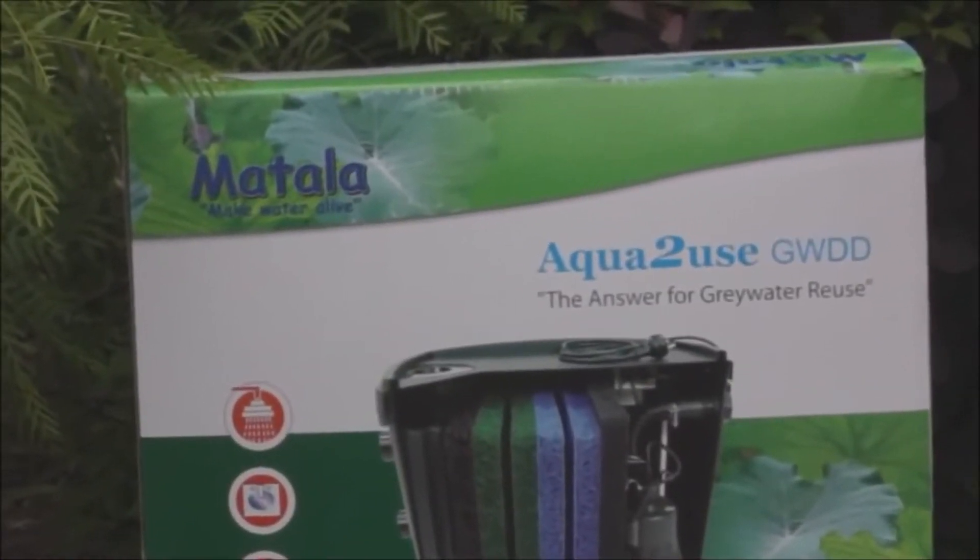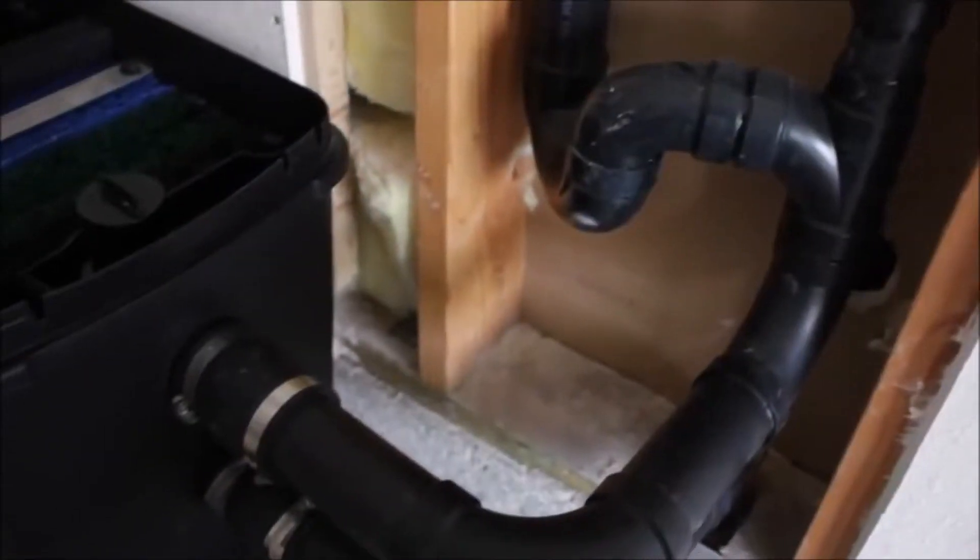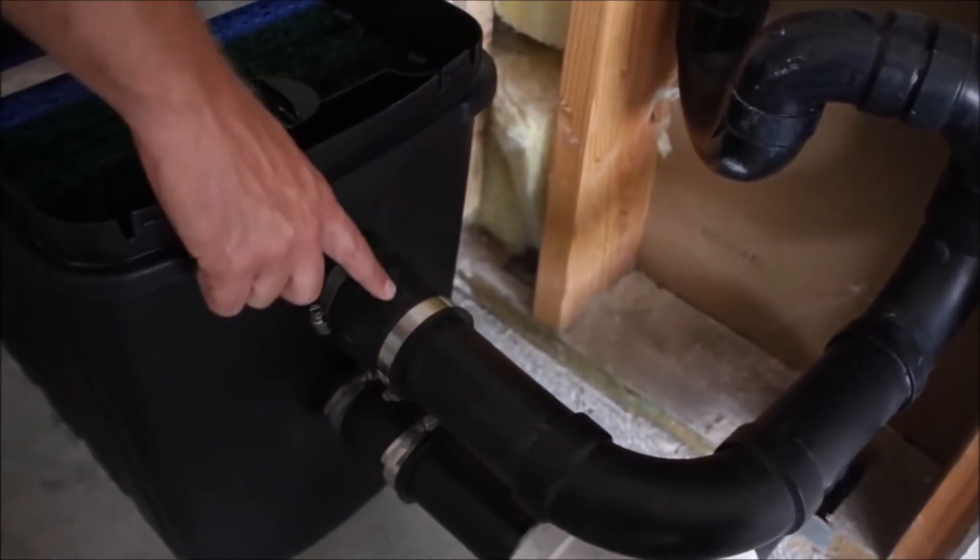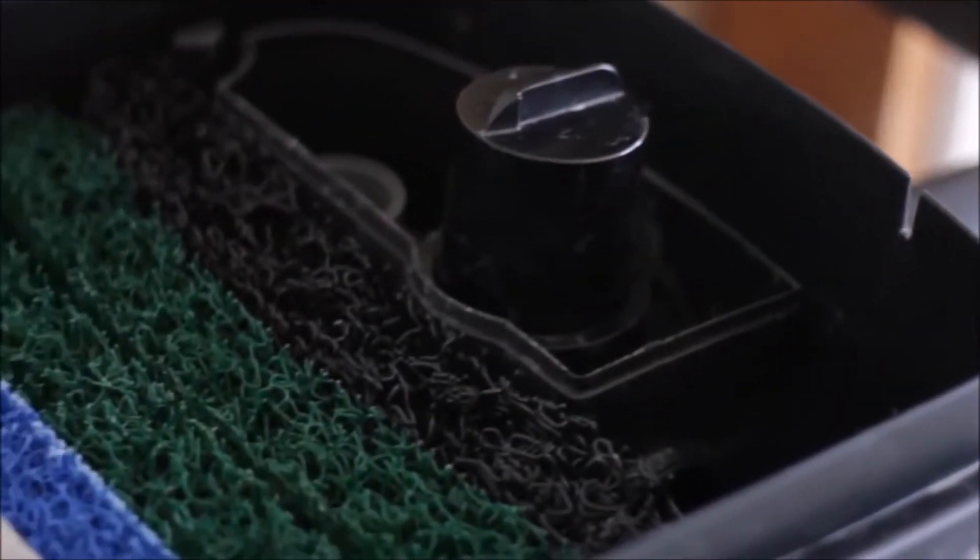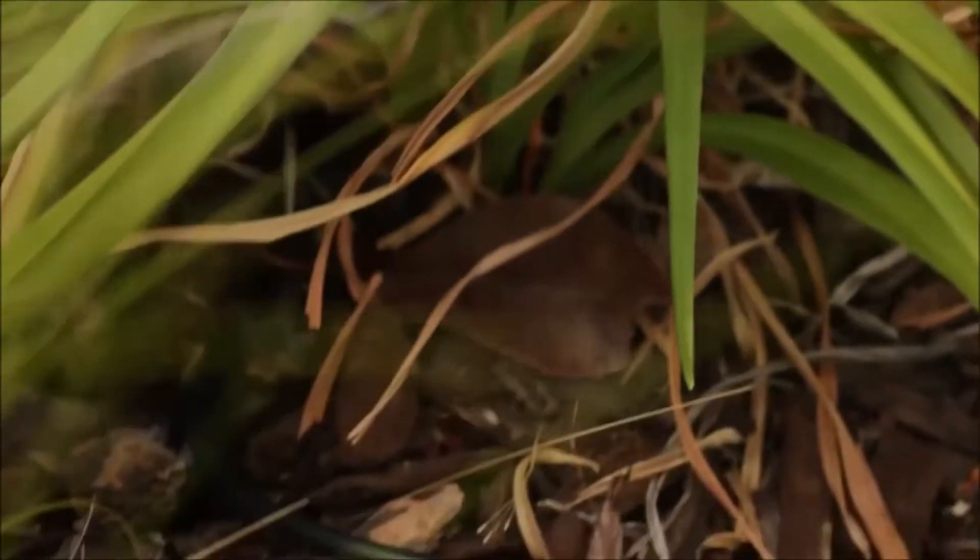This is the Aqua2Use greywater system. The greywater enters the system through this inlet, then goes through several layers of filtration. A pump gets activated when the tank is full and the water is diverted through the outlet to your outdoor irrigation system.